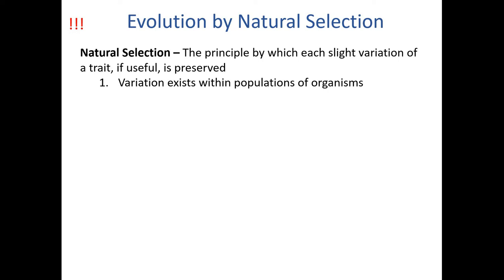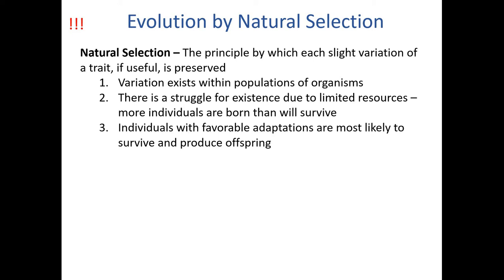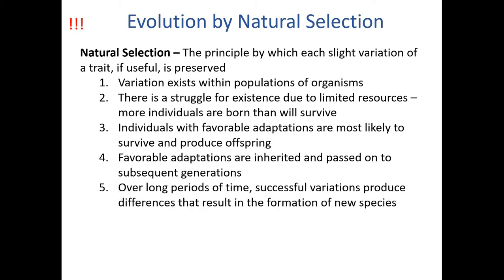Natural selection is driven by these principles. First, there is variation that exists within populations of organisms naturally, due to differences in alleles within genes, which can arise due to mutation. Second, there is a struggle for existence due to limited resources. Due to that, individuals with favorable adaptations are most likely to survive and produce offspring. Therefore, favorable adaptations will be inherited and passed on to subsequent generations, and over long periods of time, successful variations will produce differences that result in the formation of new species.